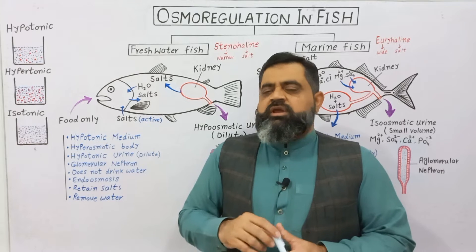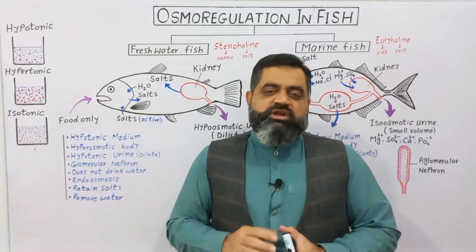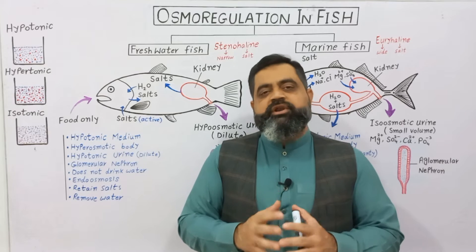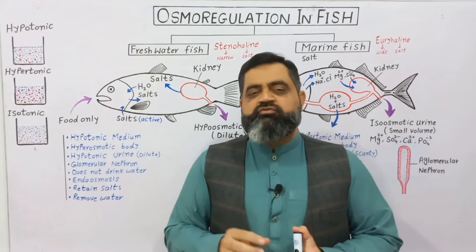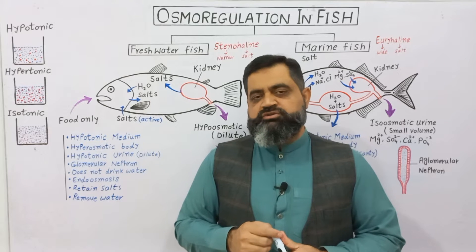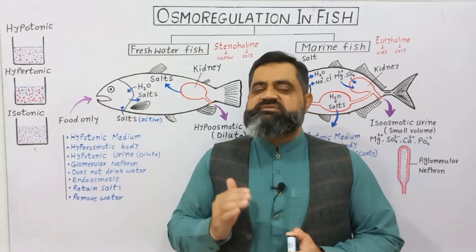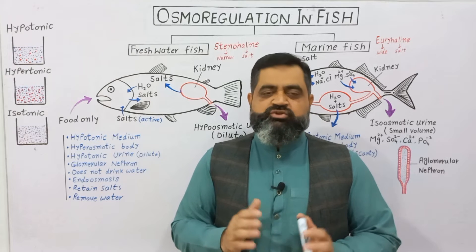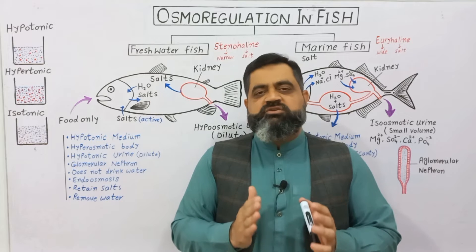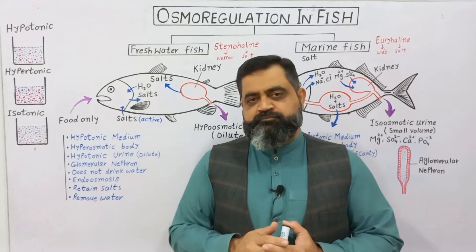The third term is isotonic. Iso means same, tonic means solute — such a solution contains a moderate amount of solutes. If we put an animal cell inside an isotonic solution, water neither enters the cell nor leaves the cell, so this solution will not harm the animal cell.